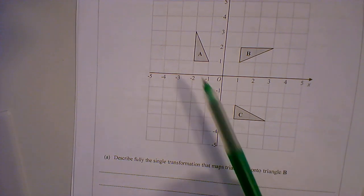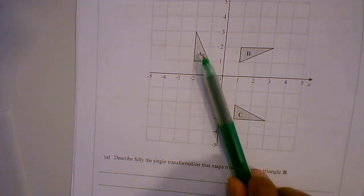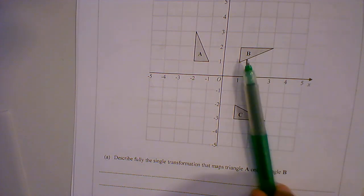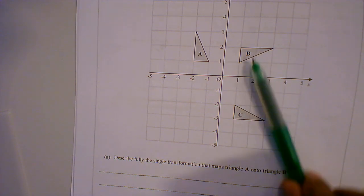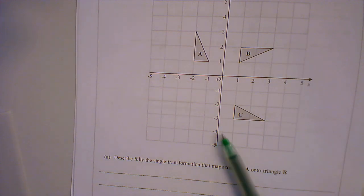So I've got triangle A on the left, it's pointing up, triangle B, that's kind of pointing to the right, and then triangle C is kind of opposite of B in a sense. So describe the single transformation.